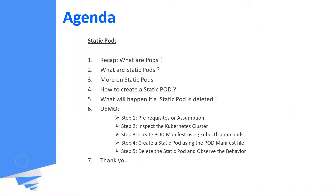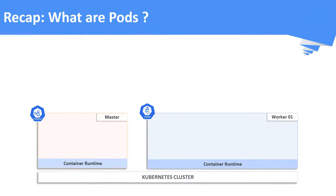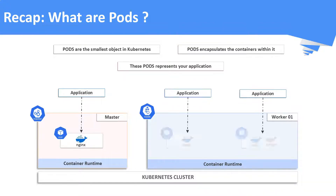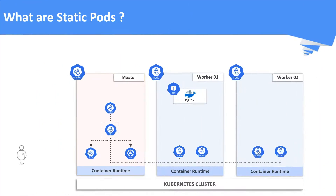This is the agenda of this video. Let us first do a small recap about pods. Pods in Kubernetes are the bare minimal object that is going to run your application in the Kubernetes cluster. In other words, pods are the smallest deployable units of computing that you can create and manage in Kubernetes. These pods encapsulate the containers within them and represent your application, so when you run a pod it means you are running an instance of your application.